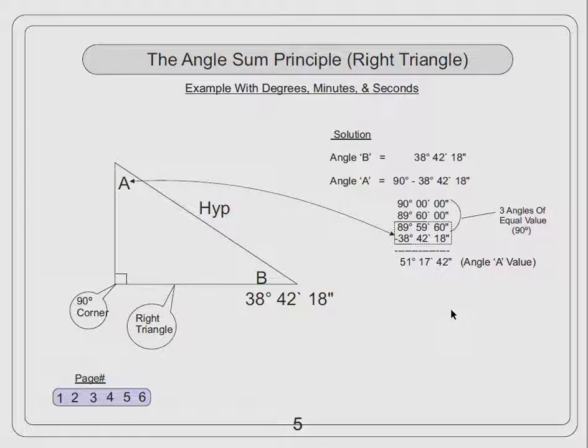Now we can do our subtraction. We subtract 38 degrees, 42 minutes, 18 seconds, and we get an answer of 51 degrees, 17 minutes, 42 seconds, for the value of angle A.